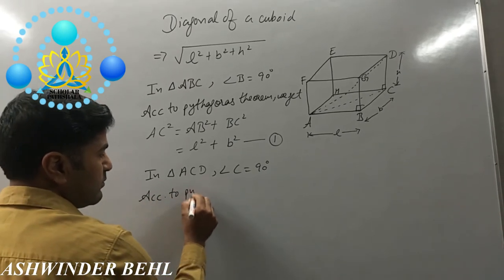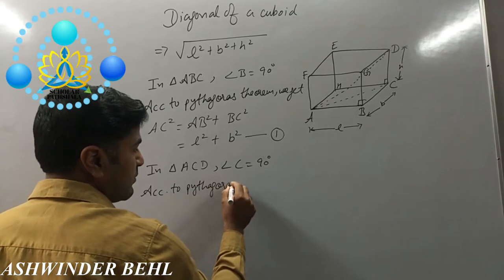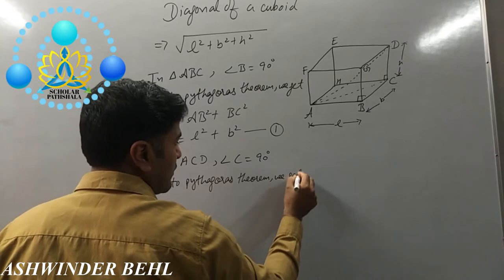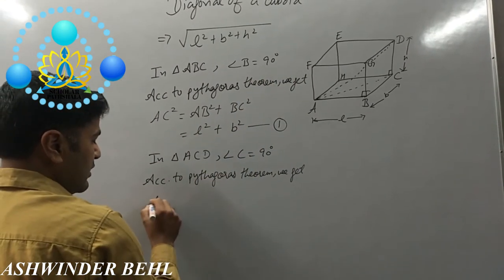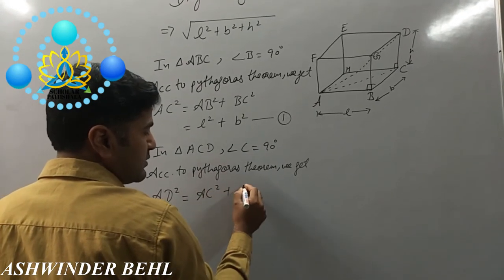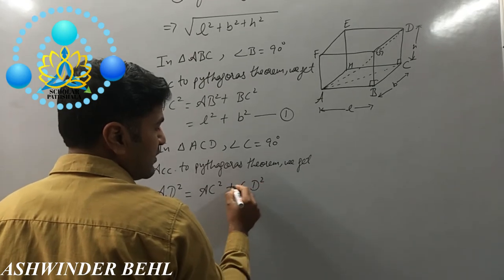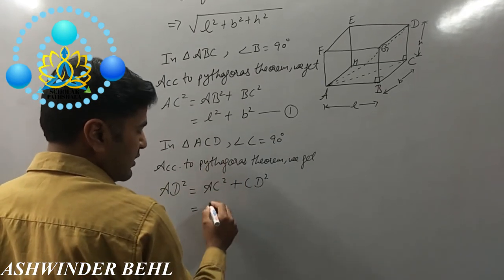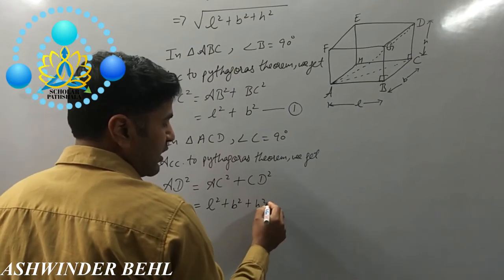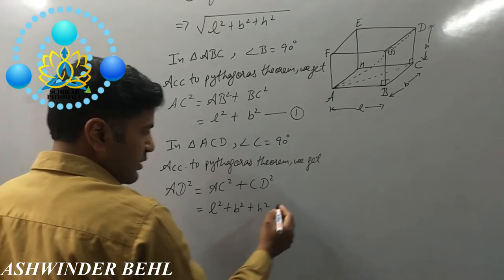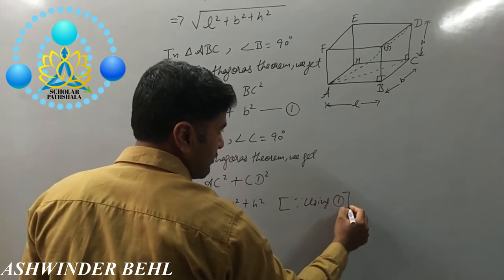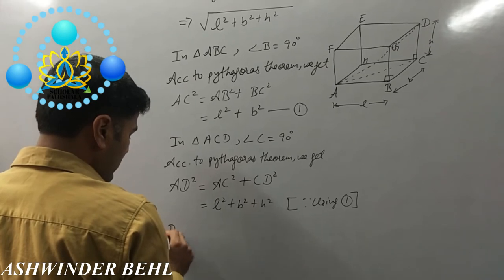According to Pythagoras theorem, AD² = AC² + CD². AC² is L² + B², and CD² is H². Using the first equation, we get AD² = L² + B² + H².